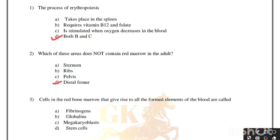Cells in the red bone marrow that give rise to all the formed elements of the blood are called fibrinogens, globulins, megakaryoblasts, or stem cells. Correct answer is option D, stem cells.